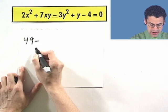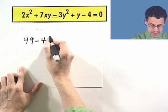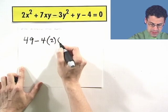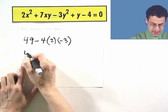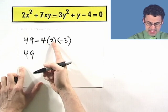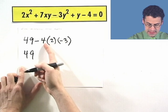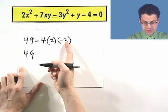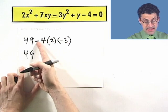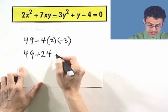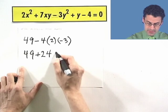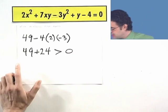Minus 4 times a, 2, c, which is negative 3. So here I see 49, and then I see 8, and 8 times negative 3 is negative 24, but I've got a minus sign in front, so that becomes a positive 24. And so that's some number, but all I care about is that it is positive. That's clear. It's positive.